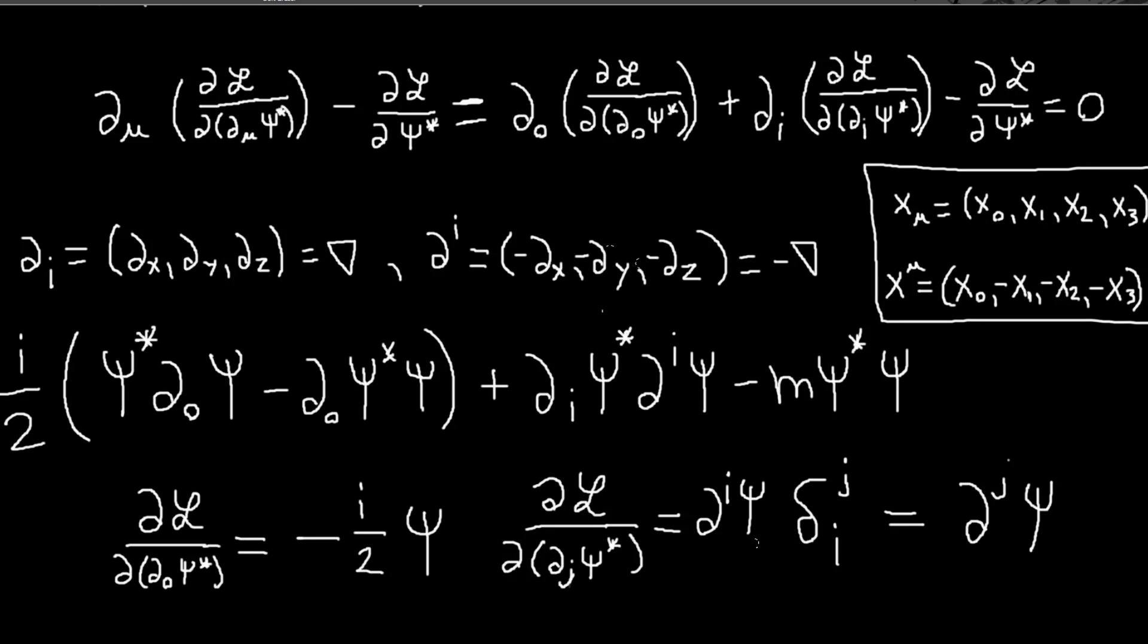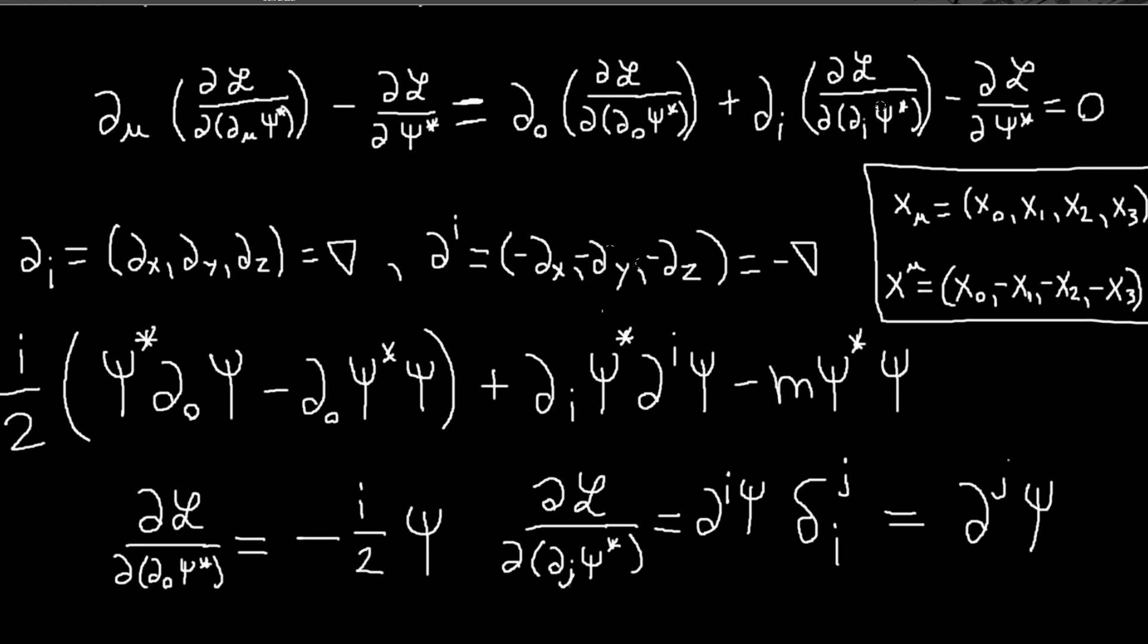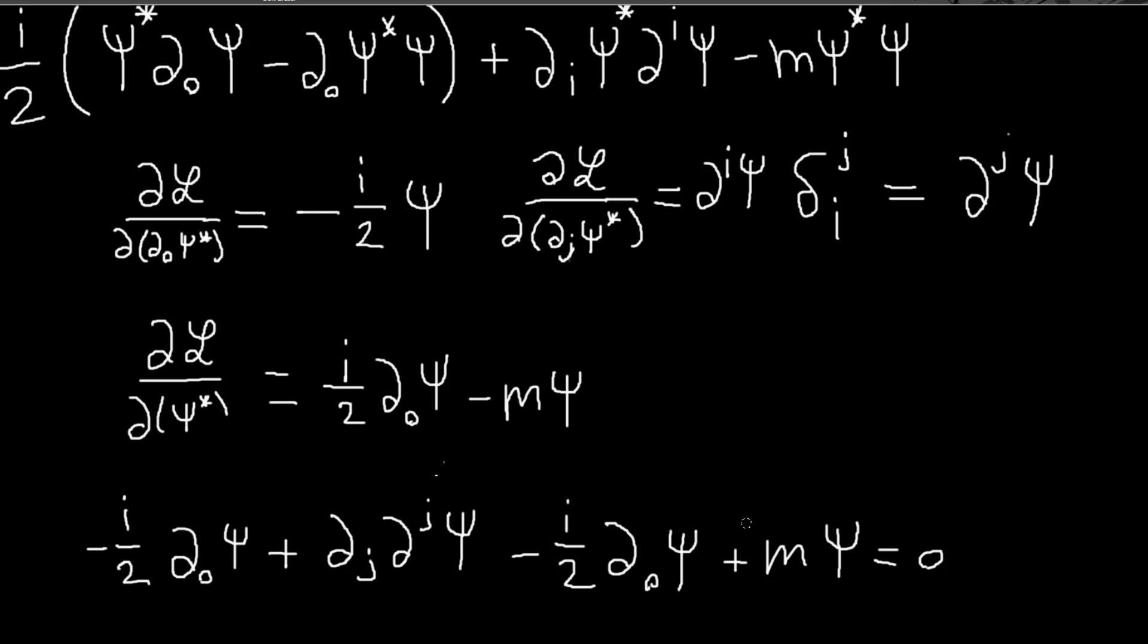Finally, we need to do this term right here. There are two terms that have a psi star, this term and this term, but it's easy to do. We'll get i over 2 and this d_0 psi, and then from this term we pick up minus m psi. Then we still need to do d_0 of this and d_i of this. I just skipped that step here.